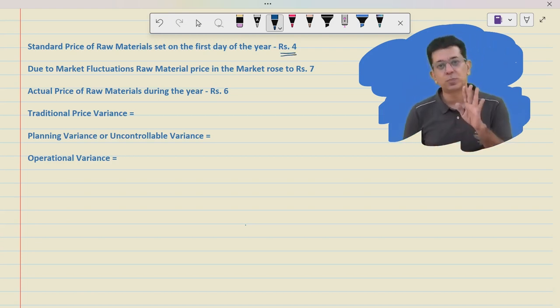They set it up as rupees 4. On the first day they thought that 4 rupees will be a good standard. But then in the market there was great shortage of raw material as a result of which the price in the market increased to rupees 7.